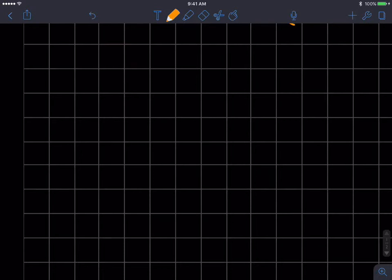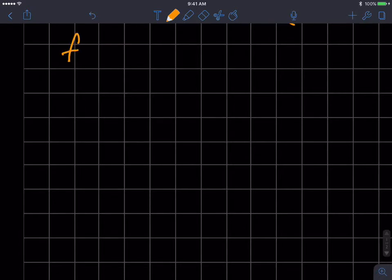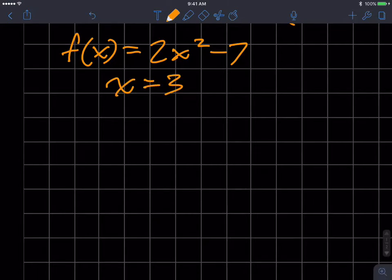Let's shift gears and use a different function because I want a little bit more complexity. Not that it's going to be complex for you. But let's now change my function to this. 2x squared minus 7. And let's say I want to evaluate that function at x equals 3. Or sometimes we'll write f of 3 is equal to like question mark or whatever.